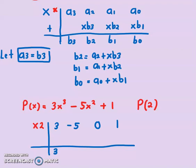Now let's see. 3 multiply with 2 is 6. Then I add: -5 + 6 = 1. 1 times 2 is 2. 0 + 2 is 2. 2 times 2 is 4. 1 + 4 is 5.